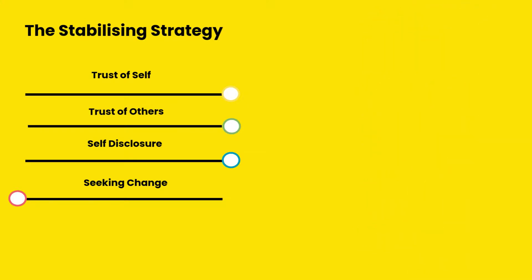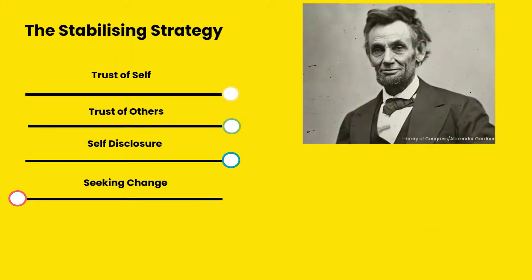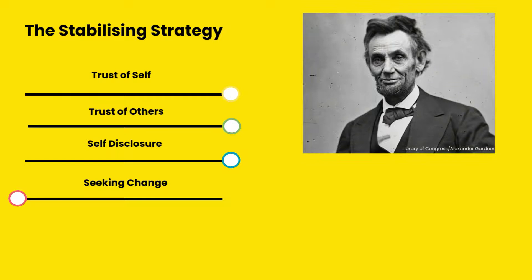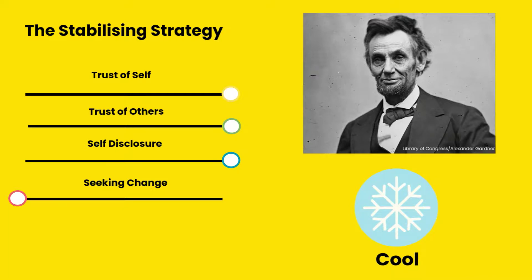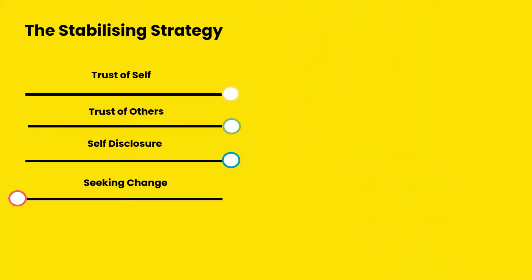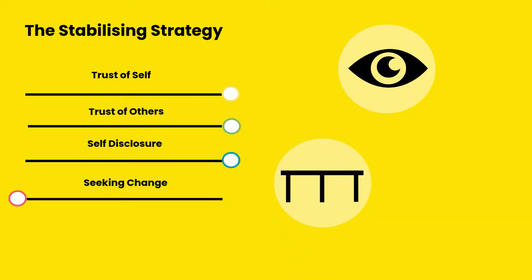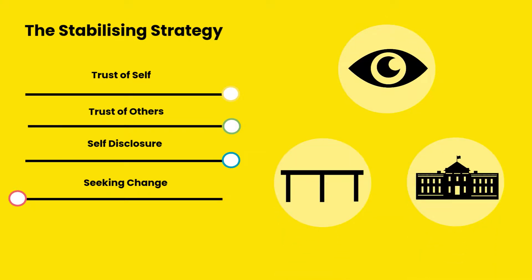By comparison, while Abraham Lincoln also used the stabilizing strategy, he utilized the cool variant. He exhibited a low trust of others, personally overseeing and shaping the ideas that would serve as the foundation for America's reconstruction following the Civil War.